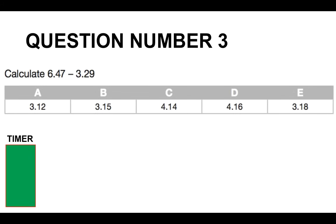Moving on to numerical reasoning test number three. Calculate 6.47 minus 3.29. A, B, C, D or E.